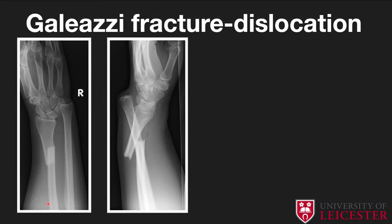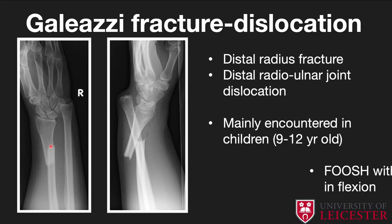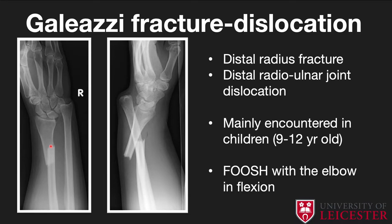In comparison, the Galeazzi fracture involves a fracture of the distal radius rather than the ulna, resulting in disruption of the distal radial ulnar joint. A similar mechanism applies — falling onto an outstretched hand with the elbow in flexion. It's mainly encountered in the pediatric population but occurs in adults, accounting for less than seven percent of forearm fractures.